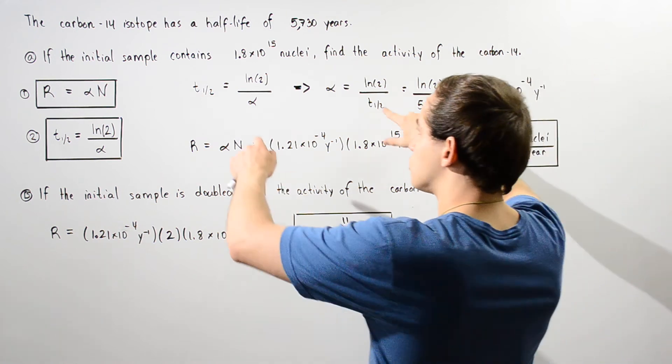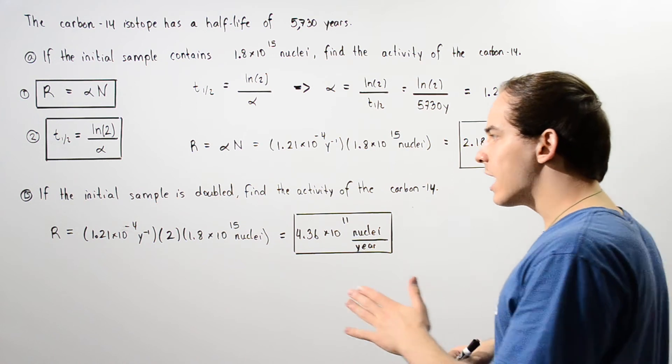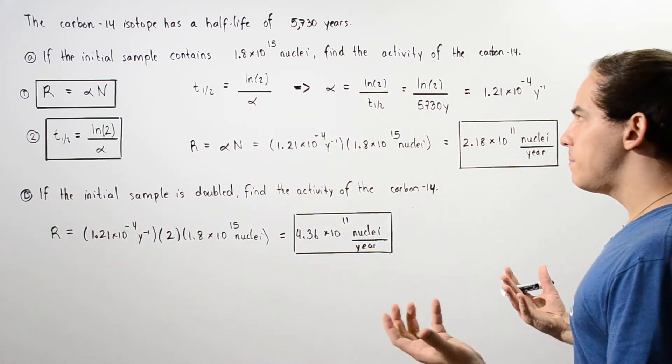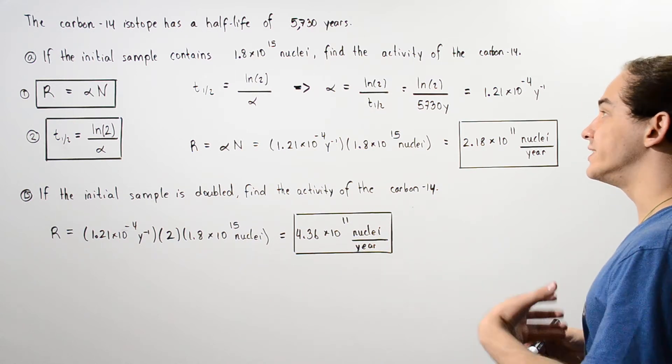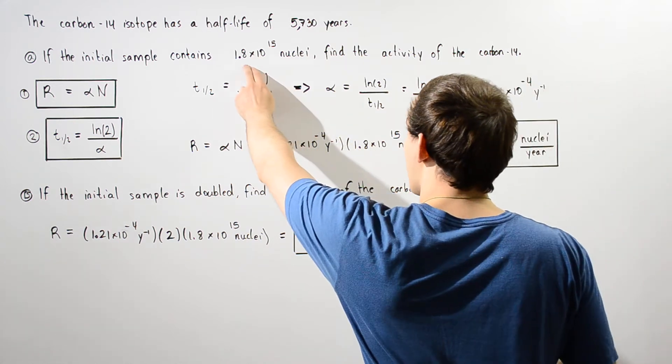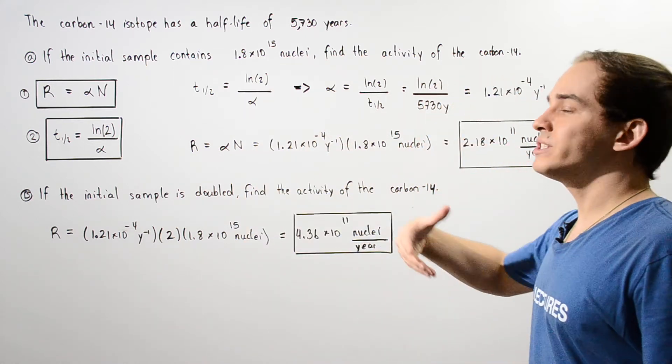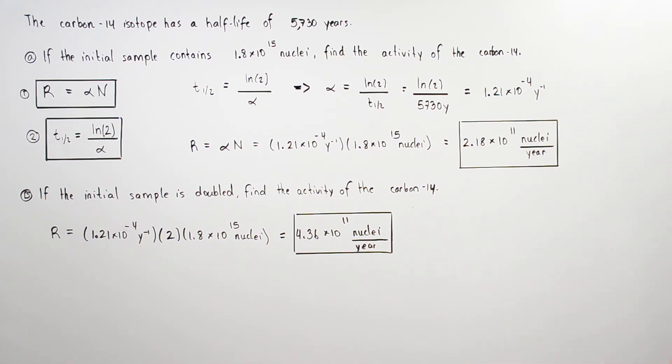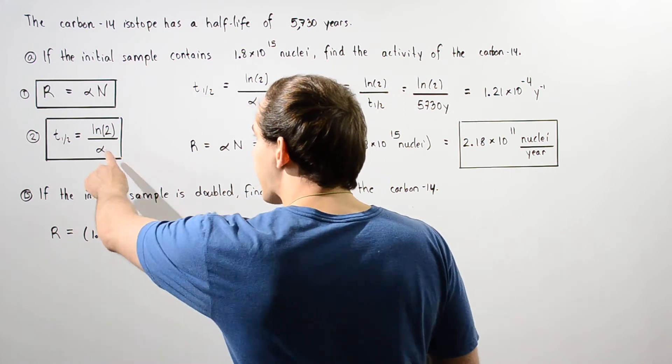Moving on to Part B, we're doubling the initial sample concentration, doubling the number of nuclei from 1.8 times 10 to the 15 to 3.6 times 10 to the 15.